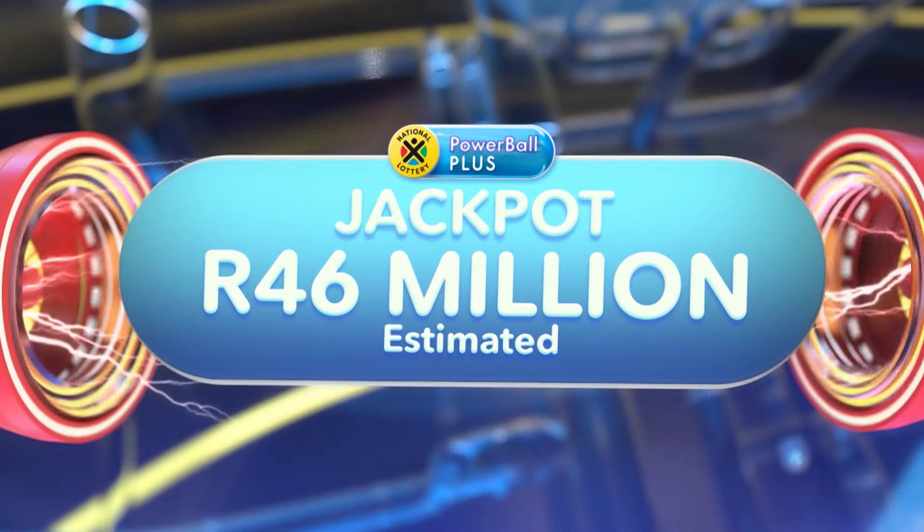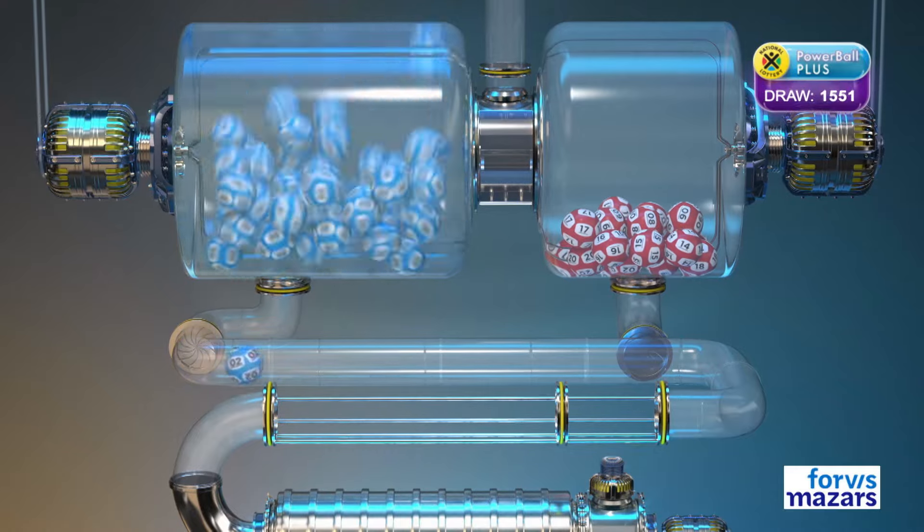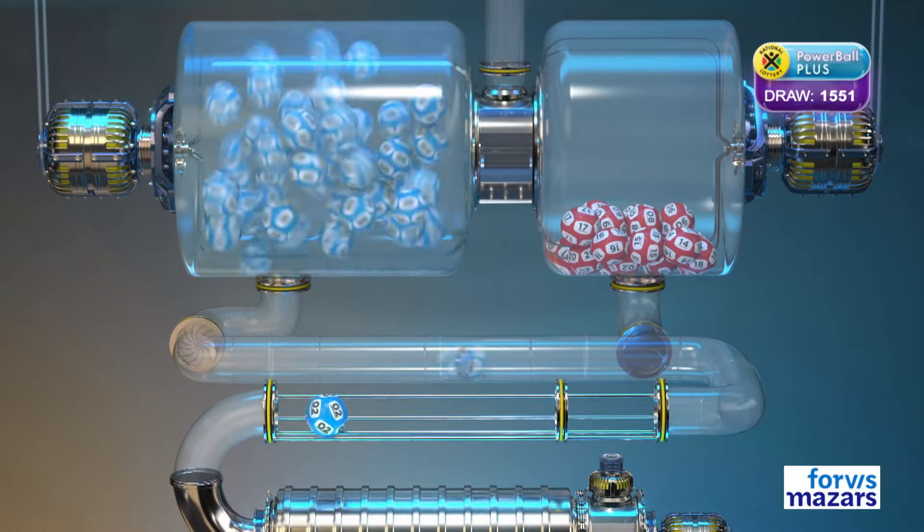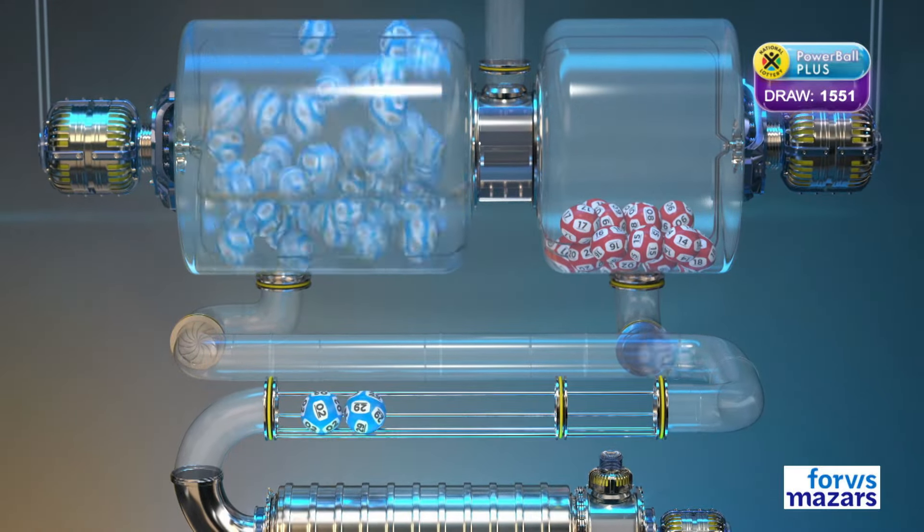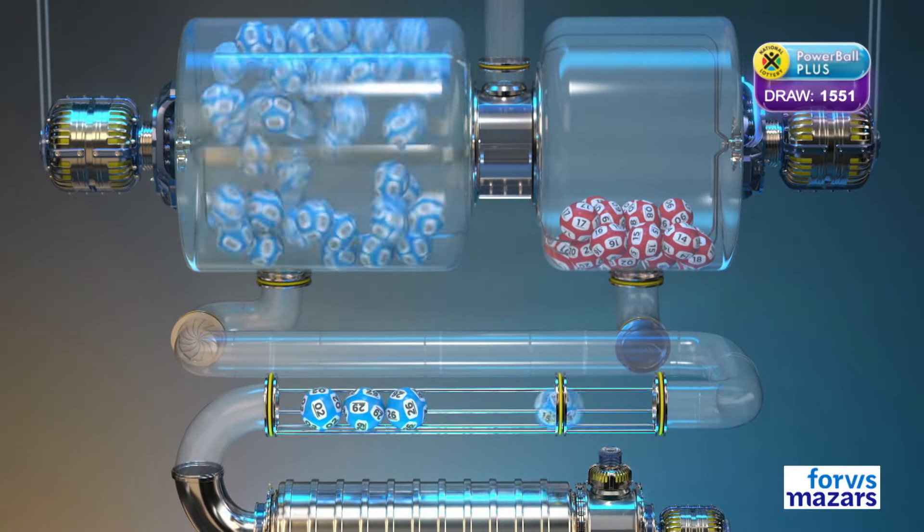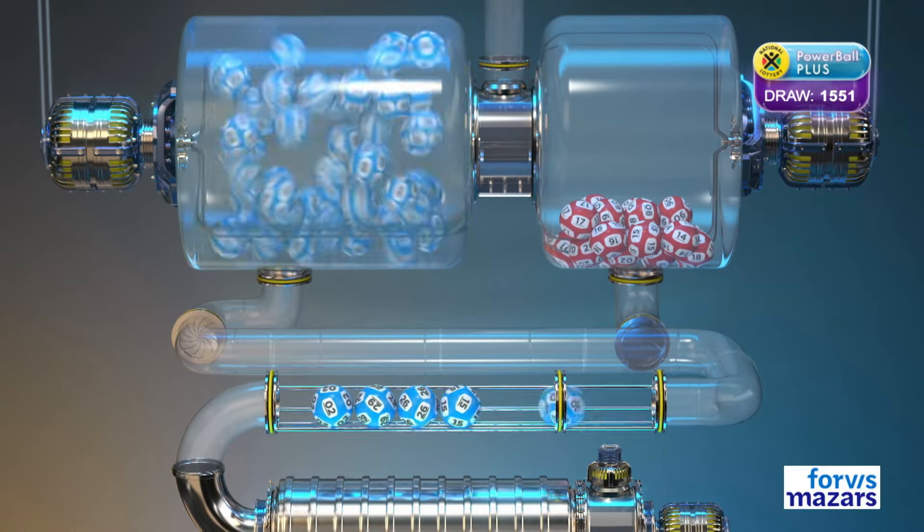The Powerball Plus numbers are... Two. Twenty-nine. Twenty-six. Fifteen. Ten.